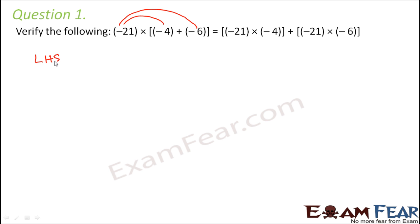So for that, let us first calculate left hand side. This is -21 × (-4 + -6). So -4 + -6, that is equal to -10. So -21 × (-10) will be equal to 210.